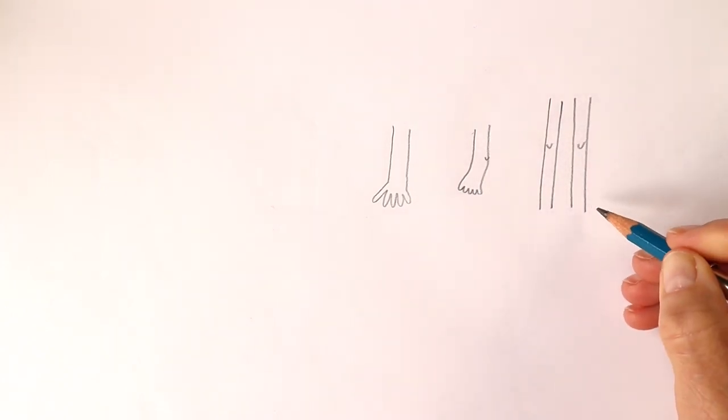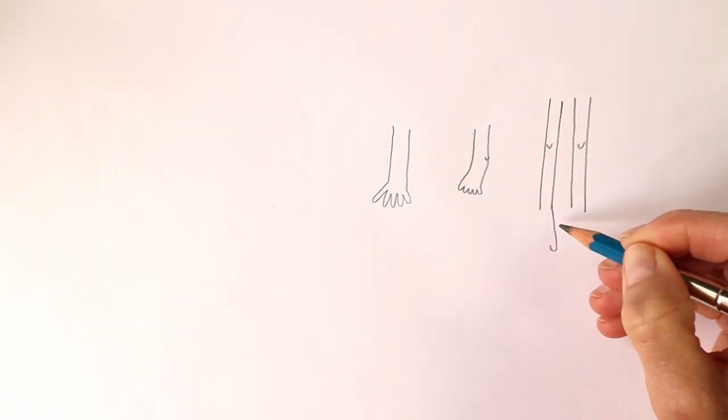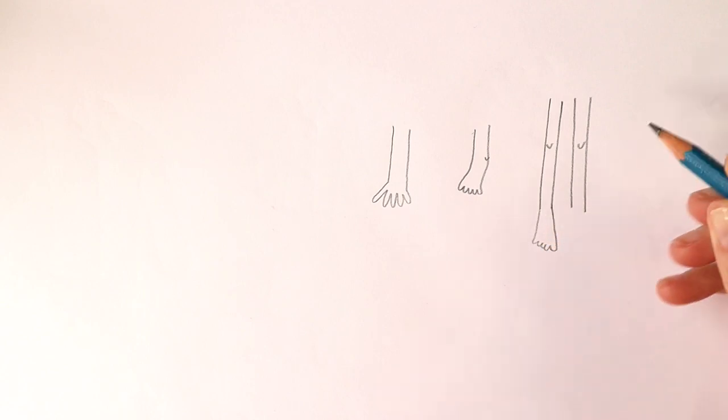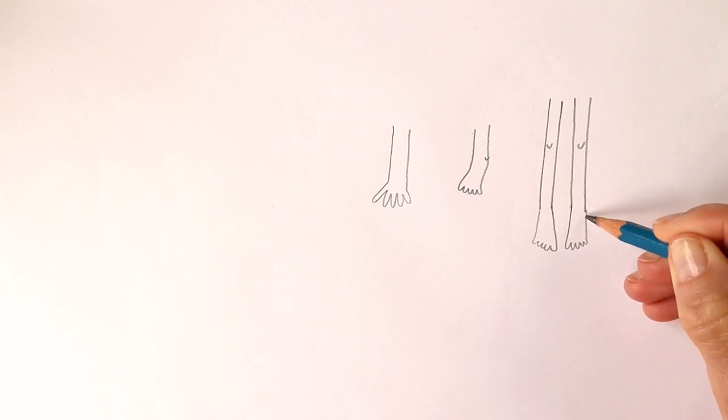Let's give this person some legs. There's their knees and we can have obviously the big toe goes towards the inside. Two, three, four, five, going smaller as you get towards the outside.